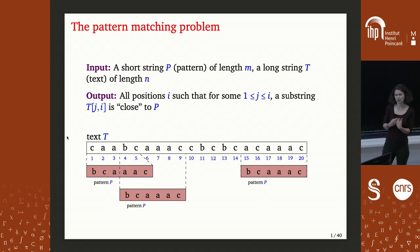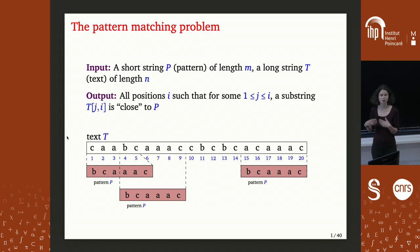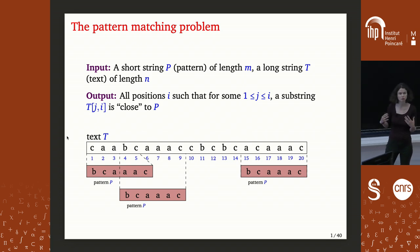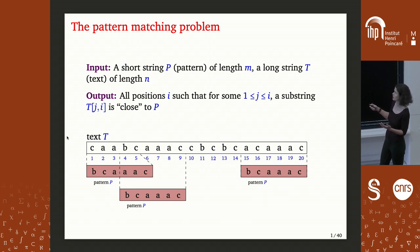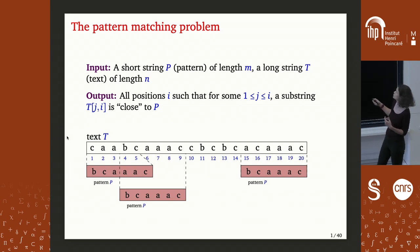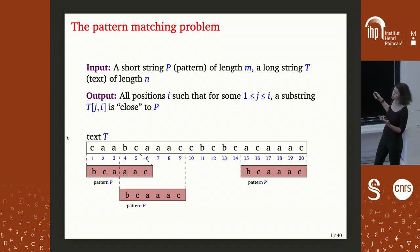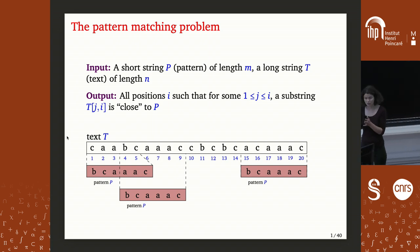What we must do is output all positions I in the text such that there is a substring which is close to P. It's up to us to define what 'close' means. For example, the substring CAABC is kind of close to BCAAC, the substring BCAAC is actually equal to the pattern, and ACAAAC is also close to the pattern.